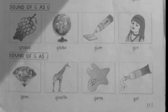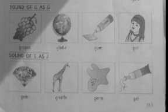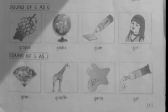Next is sound of G has J. Student, look at your book and see all the pictures. Here all words start with G but the sound has J. Your first picture is gem. G-E-M. Second picture is giraffe. G-I-R-A-F-F-E. Third picture is germ. G-E-R-M. Fourth picture is gel. G-E-L.